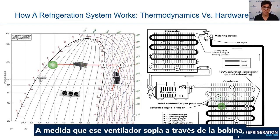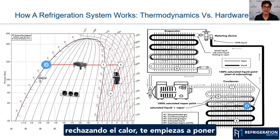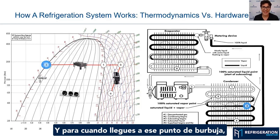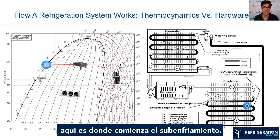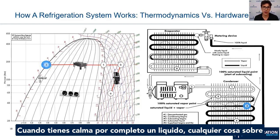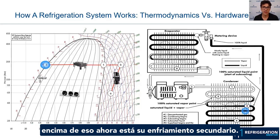As that fan blows across the coil, rejecting the heat, you start to get more and more condensing happening. And by the time you hit that bubble point, this is where your subcooling begins, when you have a full column of liquid.